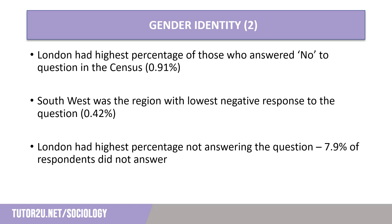Geographically, much like with sexual orientation, those who identified as having a different gender identity were more likely to gravitate towards metropolitan areas. London had the highest percentage of those answering no to the question at 0.91%, well above the England and Wales average of 0.5%. London also had the highest percentage of those not answering the question, with almost 8% choosing not to — something sociologists would look to understand the reasons behind. The lowest region with negative responses was the South West, with just 0.42% identifying as having a different gender identity than they were given at birth.